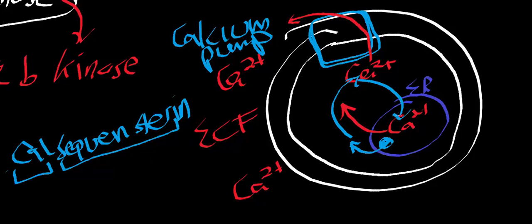This does not mean the cytosol has no calcium ions — at rest there are some, just minuscule compared to the ECF and the ER. At rest we try to keep cytosolic calcium concentration pretty low. Calcium activates two important proteins: let's look at them now.